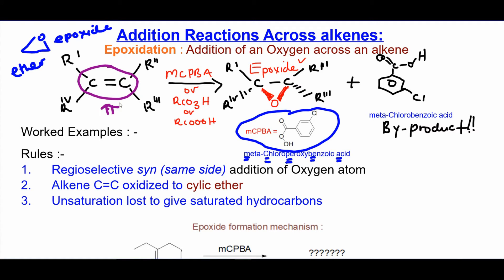And the pre-existing groups will either be flushed up or down from the opposite side where the addition took place. And you lose the unsaturation, that means you lose the double bond to get a single bond.